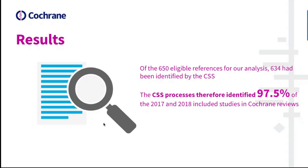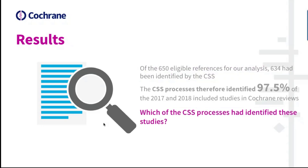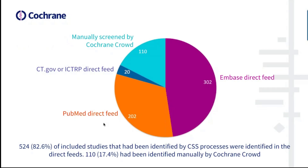This pie chart shows the breakdown of where each of the 634 references were identified from. Almost half came from the Embase direct feed, another sizeable chunk from the PubMed direct feed, some from trial registry direct feeds, and that leaves 110, or 17.4%, identified manually by the Cochrane Crowd.